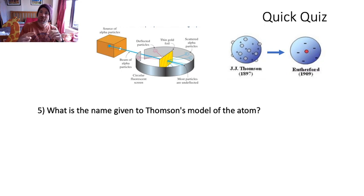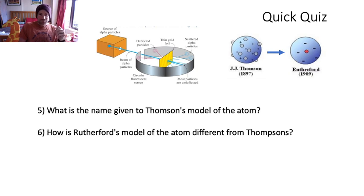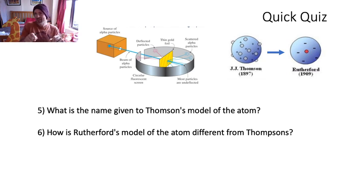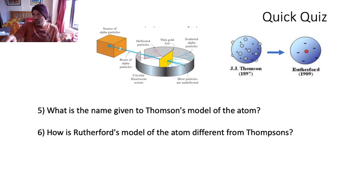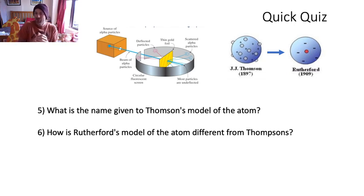Question six: how is Rutherford's model of the atom different to Thompson's? On your screen you should have two pictures of atoms - the Thompson one and the Rutherford one. Can you explain how the Rutherford one is different from the Thompson one? The clue is that little red circular section in the center of the Rutherford one - that's the thing the Thompson one didn't have.